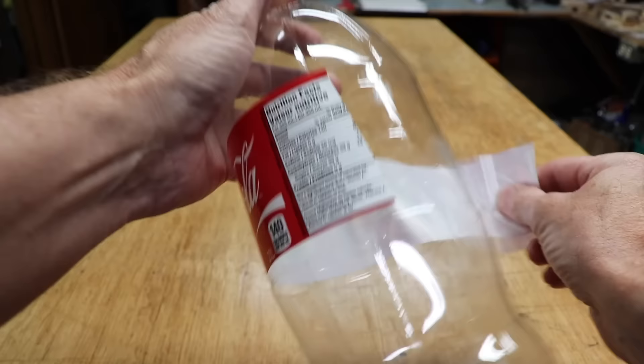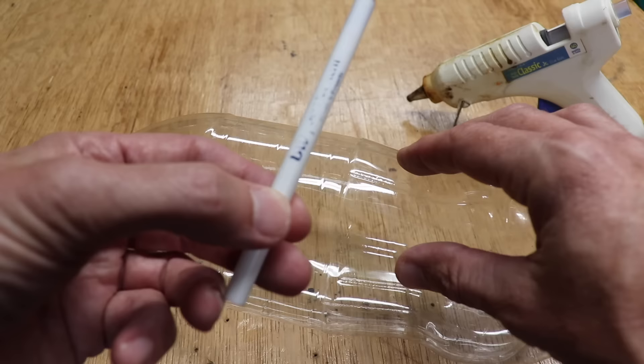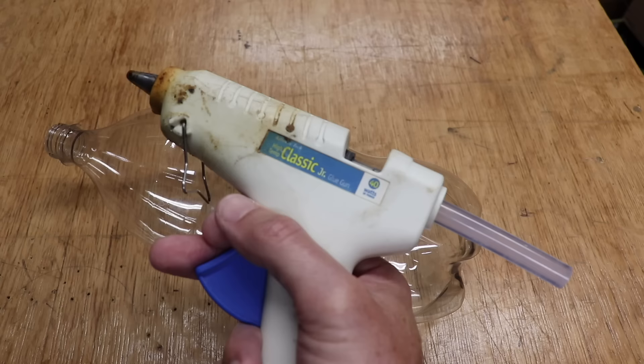Now if you look closely you'll see three distinct lines on the bottle. We want to use the bottom one. So now take your pen tube and hot glue it to the bottle so that the edge of the tube is even with the line.